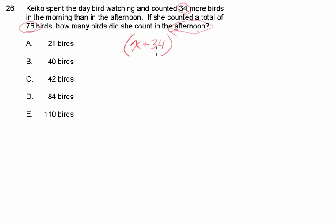And then, if you add 34 to x, that represents the number of birds she counted in the morning. So, we have x plus 34, plus x, which is the number of birds she counted in the afternoon. And the total is 76 birds in all.